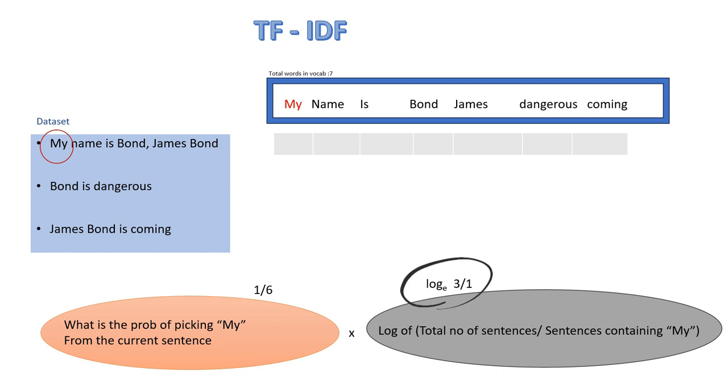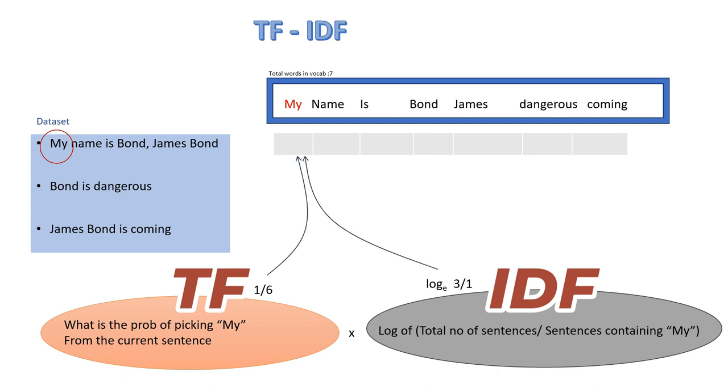So log of three by one is our IDF. Multiplying these two factors, TF and IDF, we get the value 0.26.